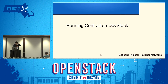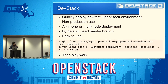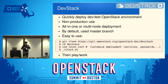The next presenter works in the Contrail business unit as a developer on the config part of Contrail. He will talk about a contribution from the OpenContrail community that allows easy deployment of Contrail on a DevStack environment. DevStack is an OpenStack side project—a collection of scripts that quickly deploy an OpenStack environment from the master branch for development or testing. It is not a production deployment.